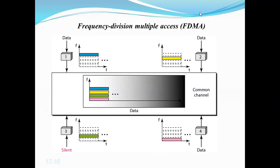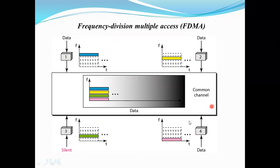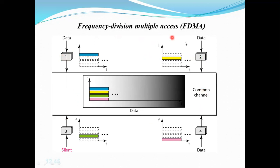If you see this particular plot diagram, there are four stations: station one, station two, station three, and station four. This is the single channel that all four stations are using to communicate. As I mentioned, in frequency division multiple access, the available bandwidth is divided into different frequency bands. You can see the whole channel is divided into four frequency bands: blue, yellow, green, and pink.